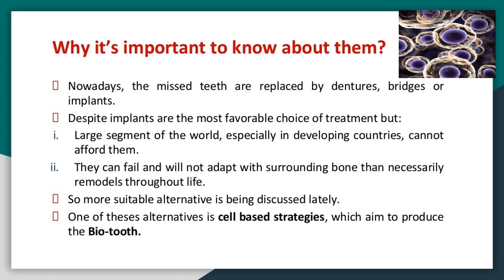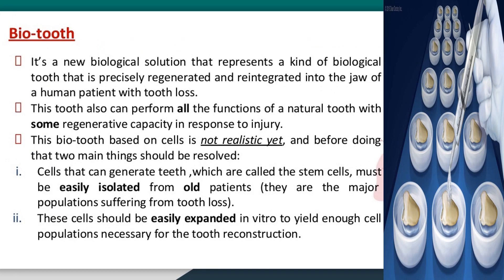What are stem cells? Stem cells are raw cells. Nowadays, missing teeth are replaced by dentures, bridges, or implants. Despite implants being the most favorable choice of treatment, a large segment of the world — especially in developing countries — cannot afford them. They can fail and will not adapt as the surrounding bone necessarily remodels throughout life. A more suitable alternative is being discussed: cell-based strategies, which aim to produce the bio-tooth.